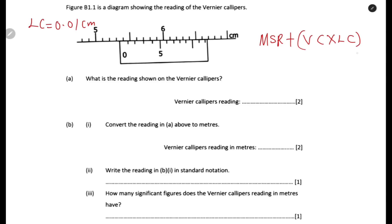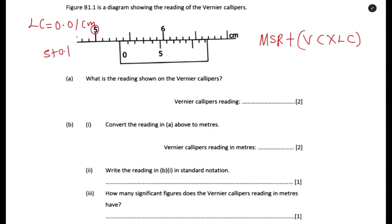The formula we use: first, find the main scale reading. The main scale is the upper part with divisions going up. Each division is 0.1 centimeter. So if this is 5, then 5 plus 0.1 gives 5.1, adding 0.2 gives 5.2, 0.3, 0.4 — up to here is 5.5. If you know that each division is 0.1 centimeter, then you will find it easy to get the readings.